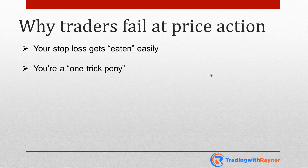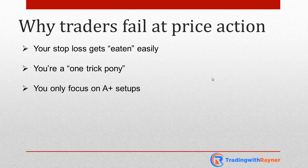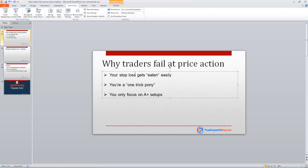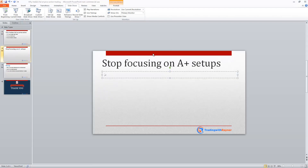Moving on — the last reason why traders fail at price action trading is because you only focus on A-plus trading setups. What is an A-plus trading setup? It's where all the stars are aligned: the market is in an uptrend, it retests support at the Fibonacci 61.8% level, forms a harmonic pattern, forms a bullish candlestick pattern, and then you go long. That's an A-plus setup where all the stars are aligned.